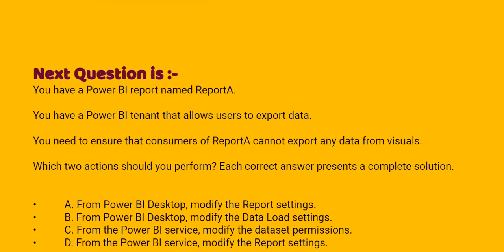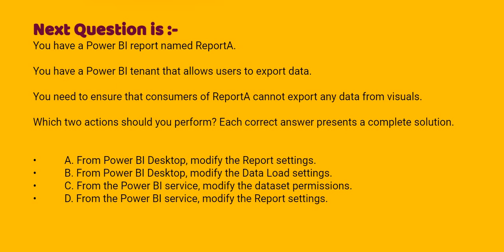Next: you have a Power BI report named Report A. You have a Power BI tenant that allows users to export data. You need to ensure that consumers of Report A cannot export any data from visuals. Which two actions should you perform? Each correct answer presents part of a complete solution. Option A: from Power BI Desktop, modify the report settings. Option B: from Power BI Desktop, modify the data load settings. Option C: from the Power BI service, modify the dataset permissions. Option D: from the Power BI service, modify the report settings.